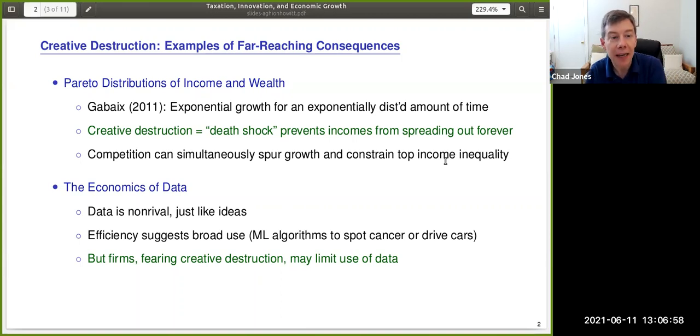A second example of the far-reaching consequences of creative destruction is from work on the economics of data. Just like ideas, data is non-rival. It's infinitely usable. And efficiency then suggests that you want broad use of data. So if we're training machine learning algorithms to spot cancer or drive our cars, we want the algorithms trained on as much data as possible.